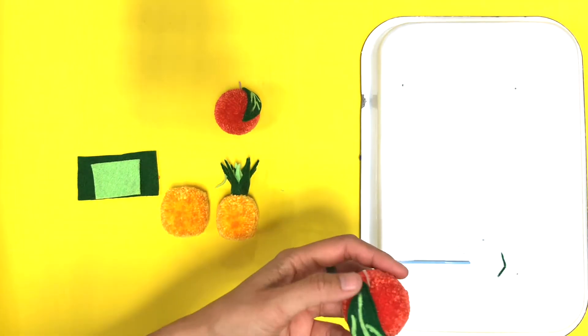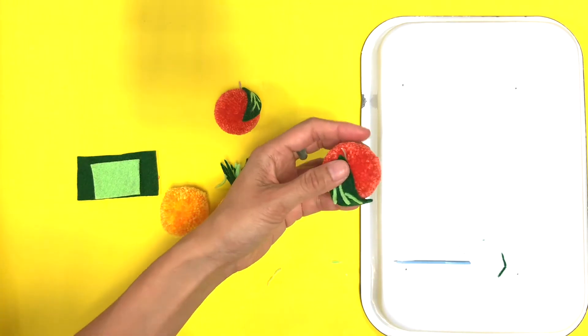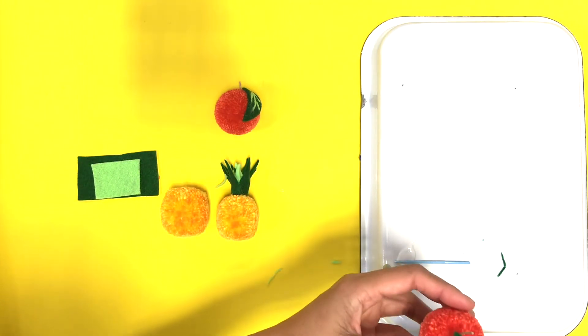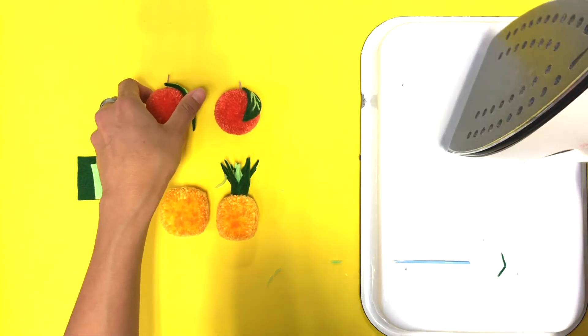Usually what I like to do is just hold it down for a while. Again, if you have a hot glue gun, you don't have to worry about it. But if you don't, just want to press it down, give it some heat. Let's set that aside and let it dry.